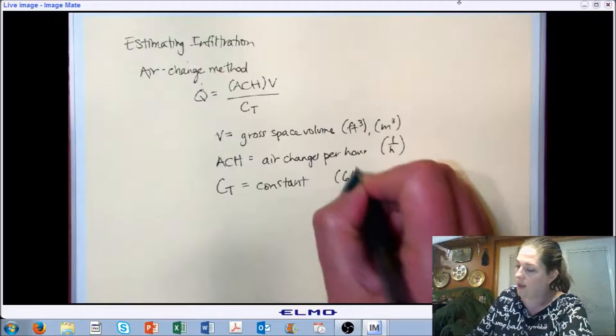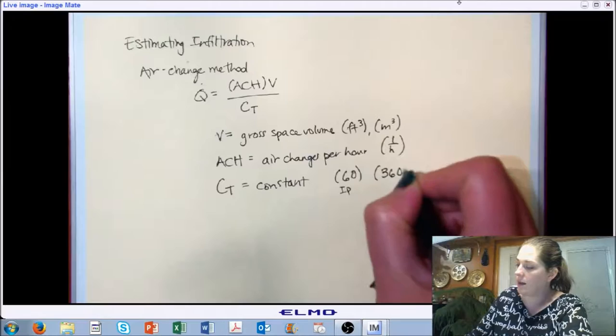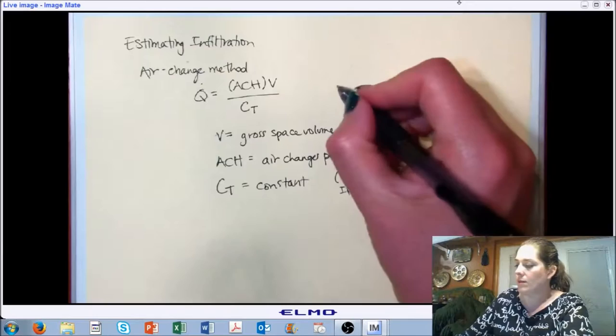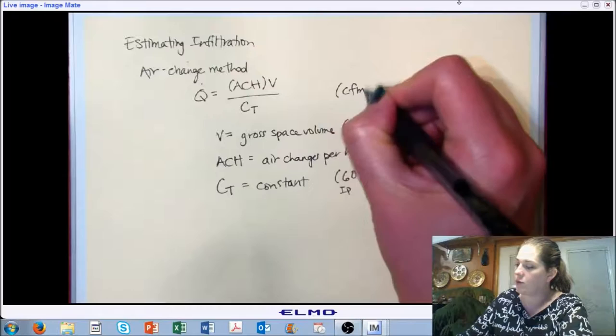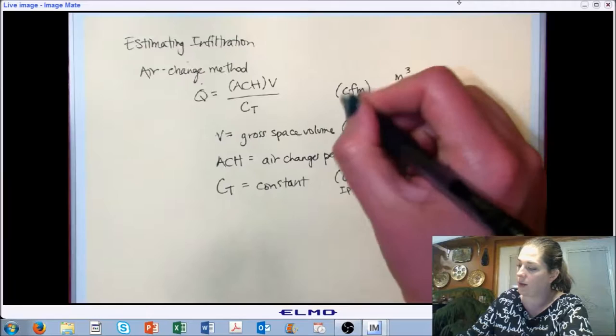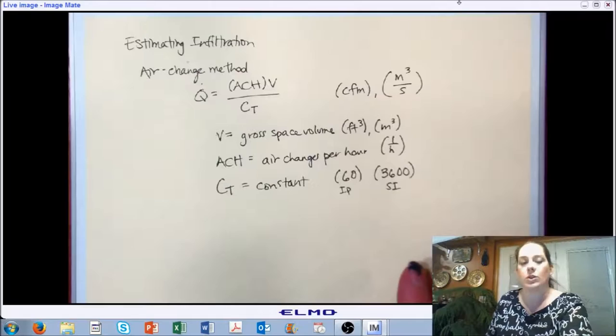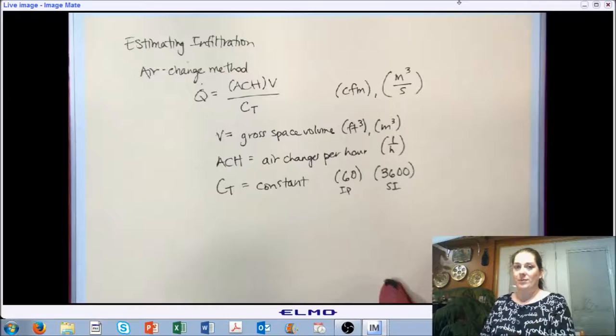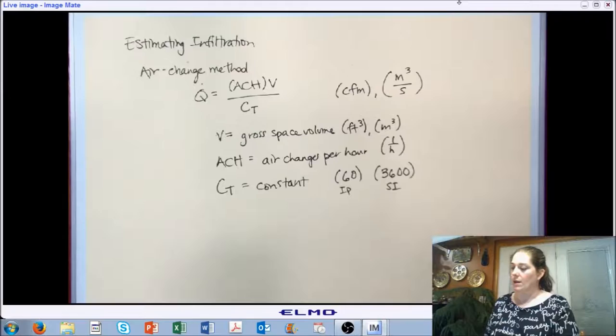If we are working in IP, that constant is 60. If we are working in SI, that constant is 3600. The units on Q, our flow rate — our estimate for infiltration — are in volumetric flow rates. For IP, we're at CFM, and for SI, we're in meters cubed per second. And it's that simple. That's the air change method.